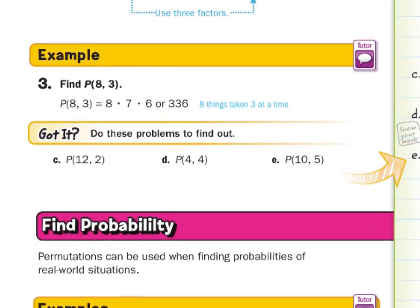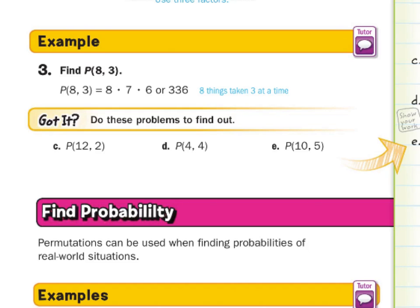So now as we look to see if we got it, the permutation of 12 things taken two at a time, this would be 12 times 11, which is 132. In D, the permutations four things taken four at a time, four times three times two times one. So we're starting with that first number, and we're going out this many times. So one, two, three, four times. We're starting with this number, 12, and going out two times 12 and 11. And four times three times two times one is 24.